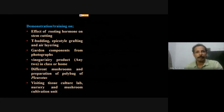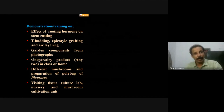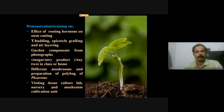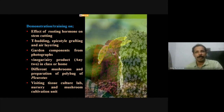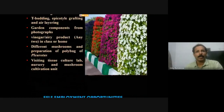Training also includes identification of garden components from photographs, different mushrooms, and preparation of polybag cultivation of Pleurotus, which is a type of mushroom. If time permits, students will visit a tissue culture lab, nursery, or mushroom cultivation unit.